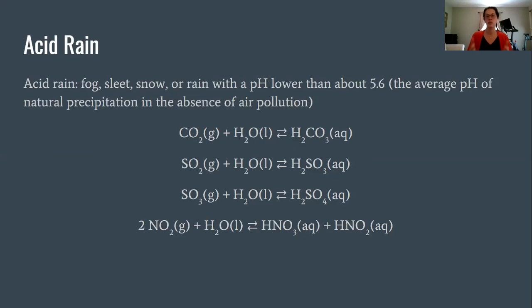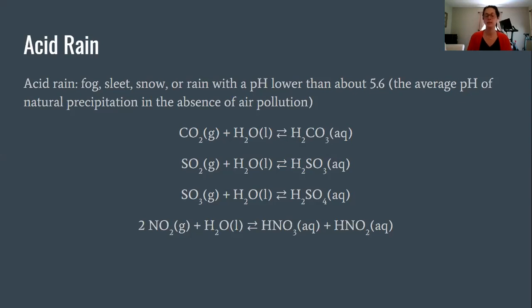First, acid rain. Acid rain or acid precipitation is any type of precipitation — fog, sleet, snow, or rain — that has a pH lower than 5.6. This is the average pH of natural precipitation if there's no air pollution in the atmosphere, so that's what we use as our benchmark: that pH of 5.6.